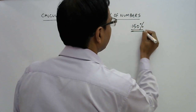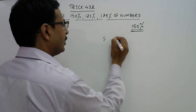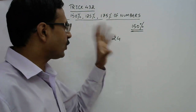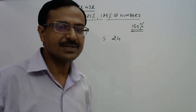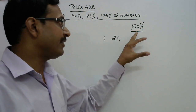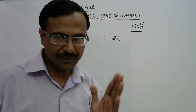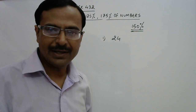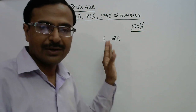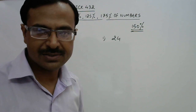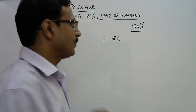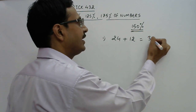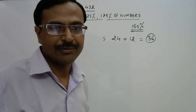Let us take up some examples for 150% of a number. Suppose we have 24 and we need to calculate 150%. Just forget 100% — focus on 50%. If you know that 50% of a number is half of that number, the problem is solved quickly. Half of 24 is 12, so just add half of the number to the original number to get 150%.